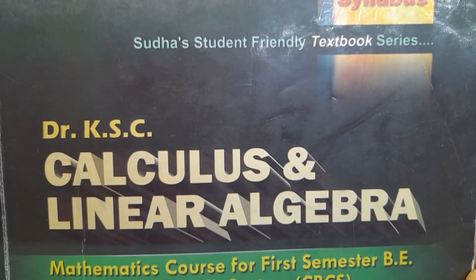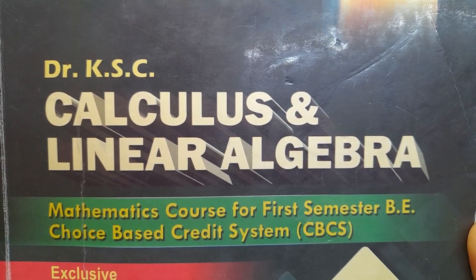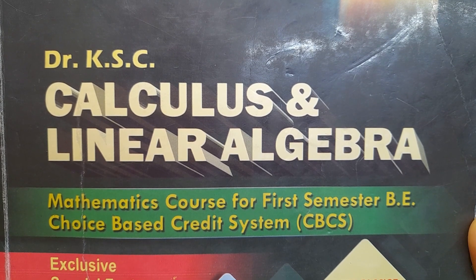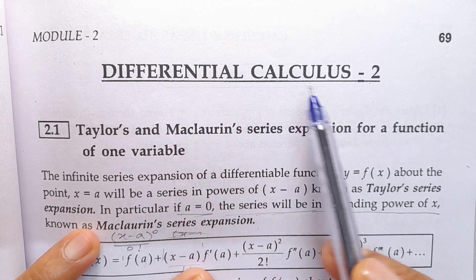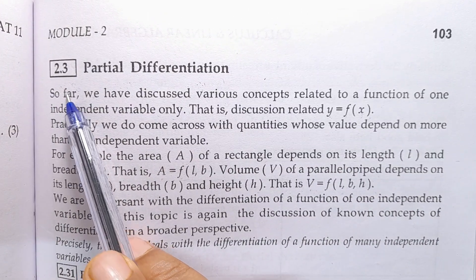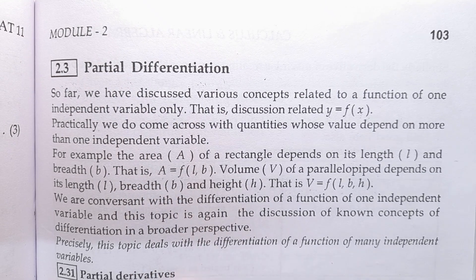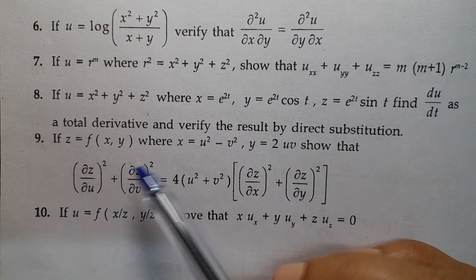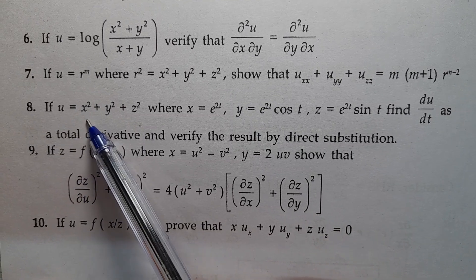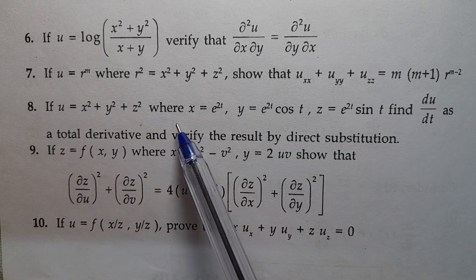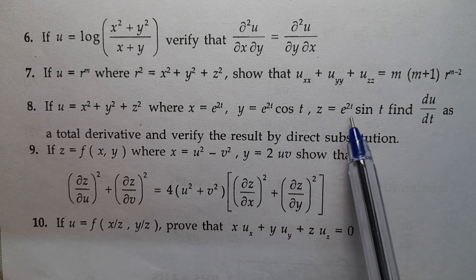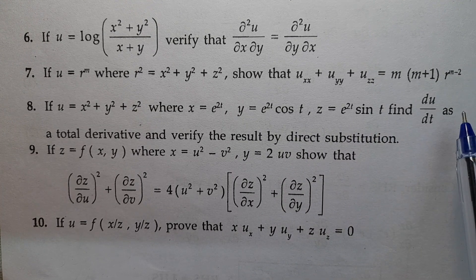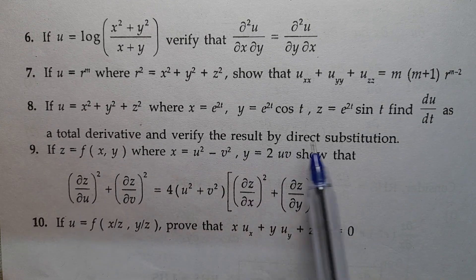Namaste. Subject: Engineering Mathematics for First Semester BE. Book Author: Dr. K.S.C. Module 2, Differential Calculus 2, Article No. 2.3, Partial Differentiation — Assignment Problem No. 8. If u equals x squared plus y squared plus z squared, where x equals e^(2t), y equals e^(2t) cos t, z equals e^(2t) sin t, find du/dt as a total derivative and verify the result by direct substitution.